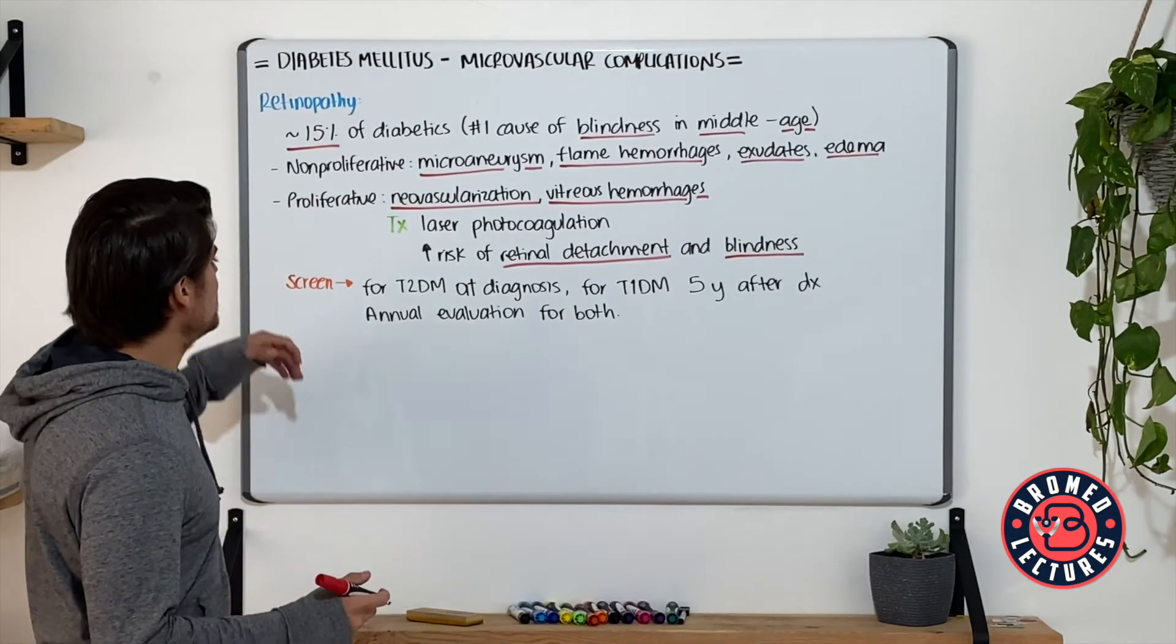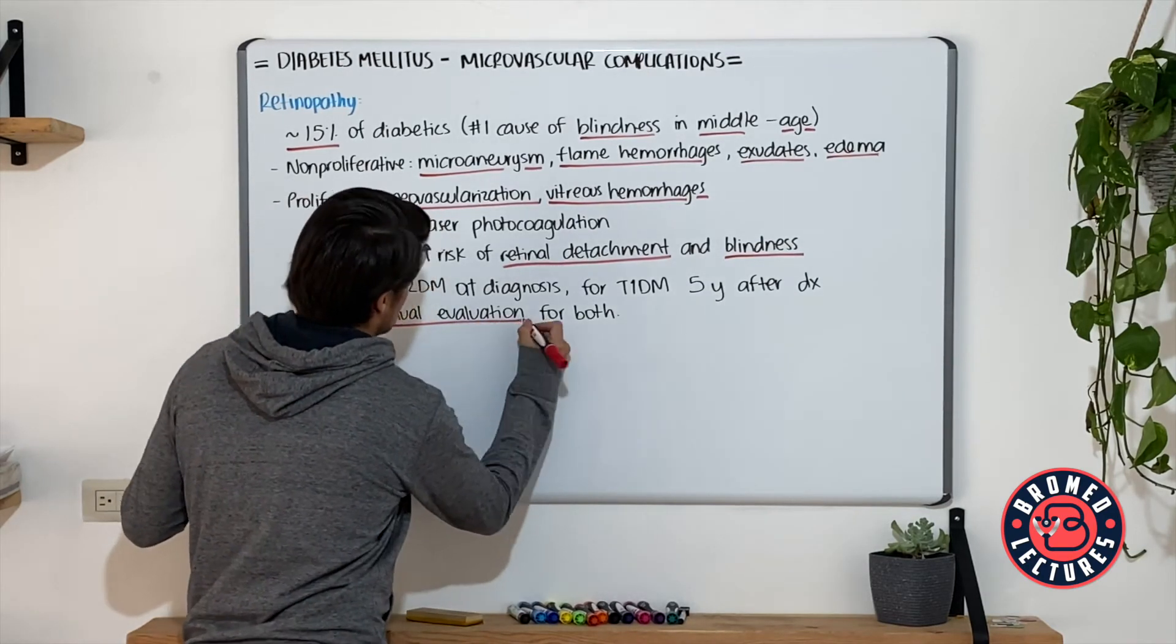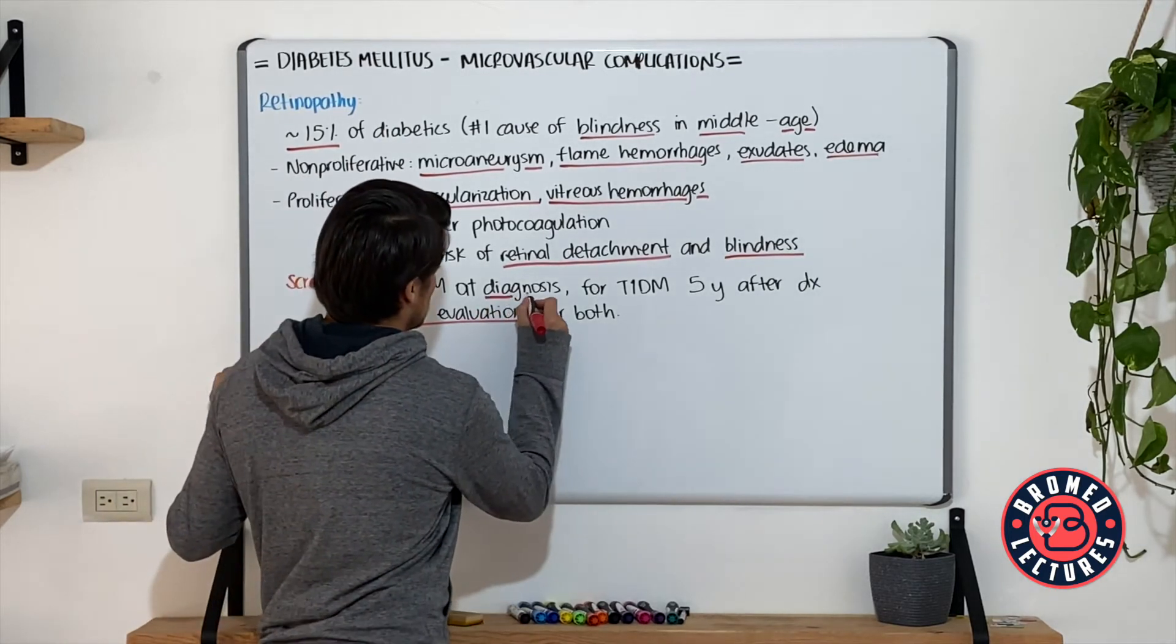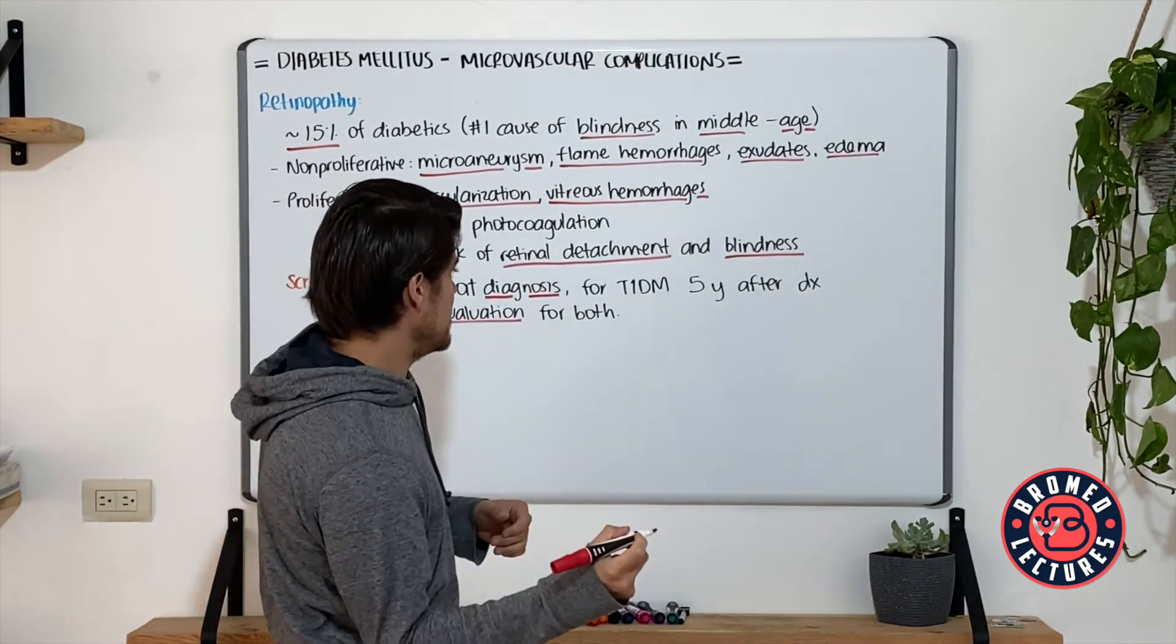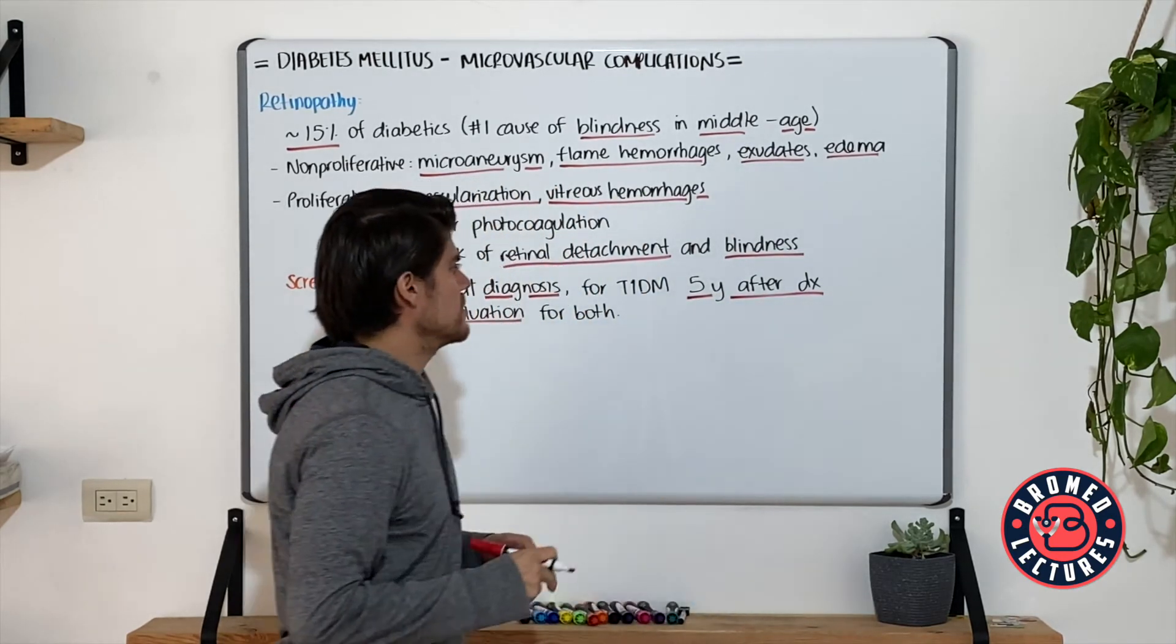For screening, we annually evaluate the retina through the slit lamp. We begin with type 2 diabetes patients at diagnosis. For type 1 diabetes patients, it starts at five years after the diagnosis of the condition.